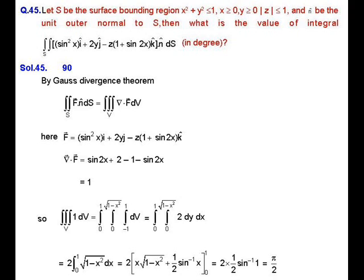When we compute the divergence of this vector point function F equal to sin²x î + 2y ĵ minus z(1 + sin 2x) k̂, we get the divergence equal to 1. So by the Gauss Divergence Theorem the surface integral F dot n-cap dS equals the volume integral of 1 dV.